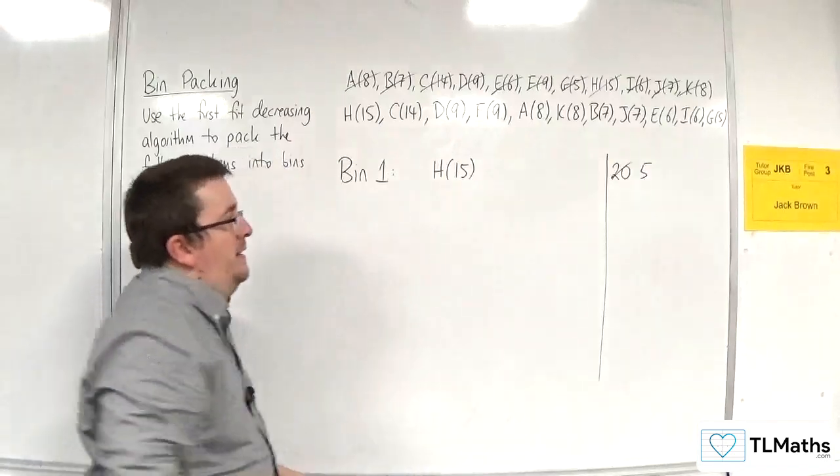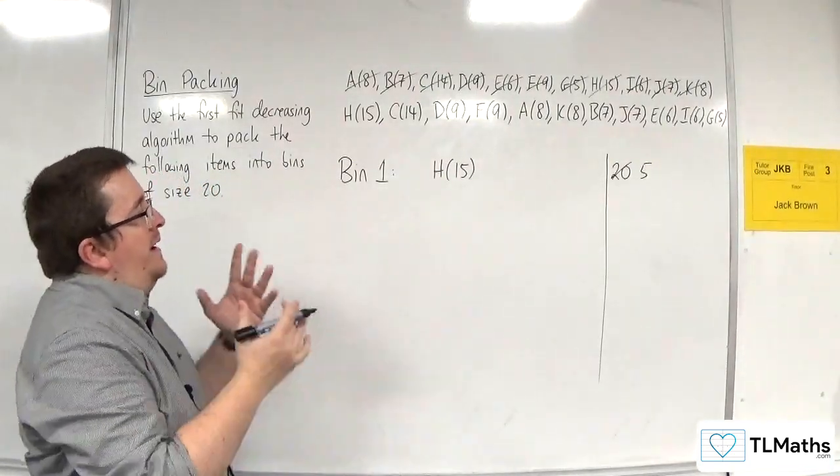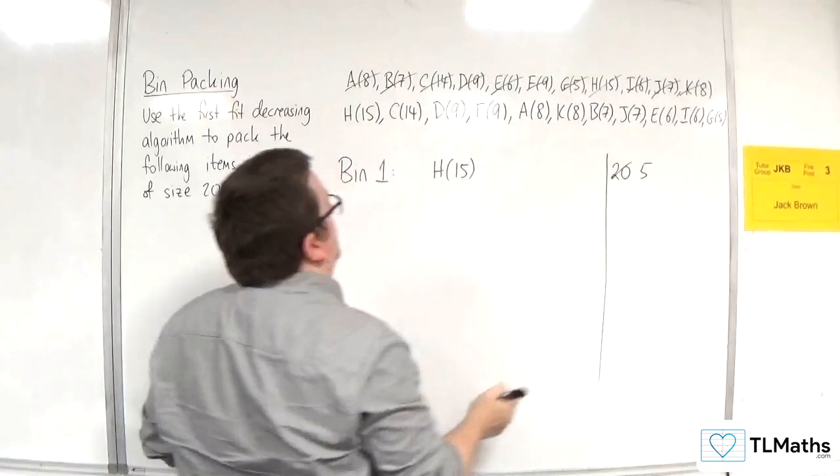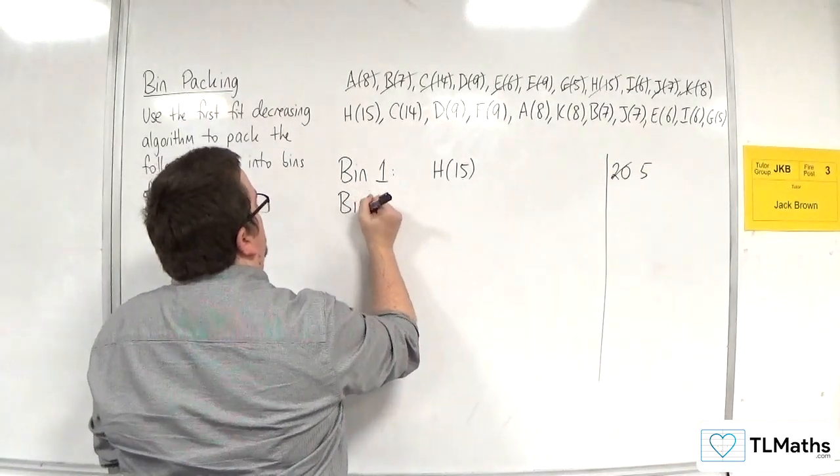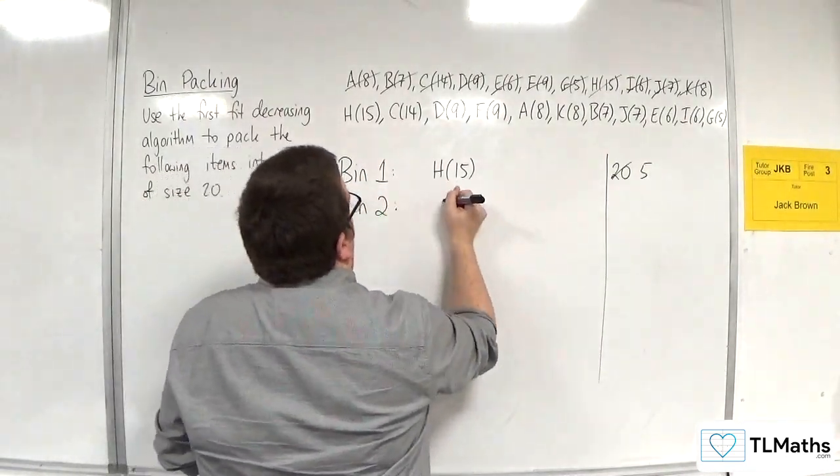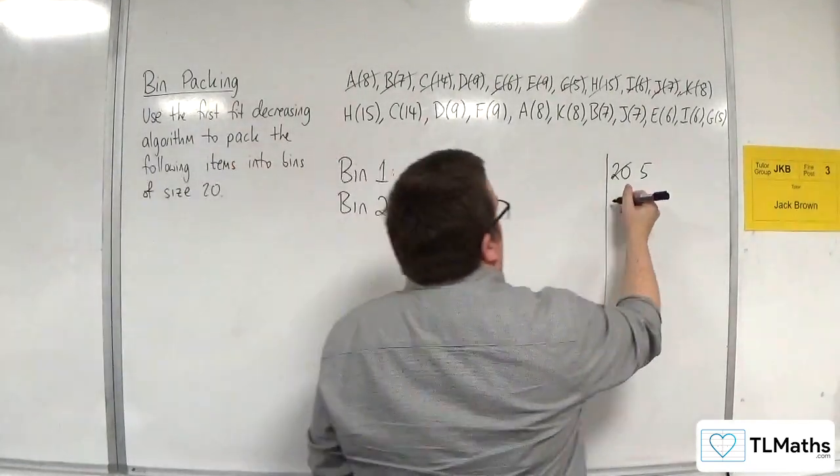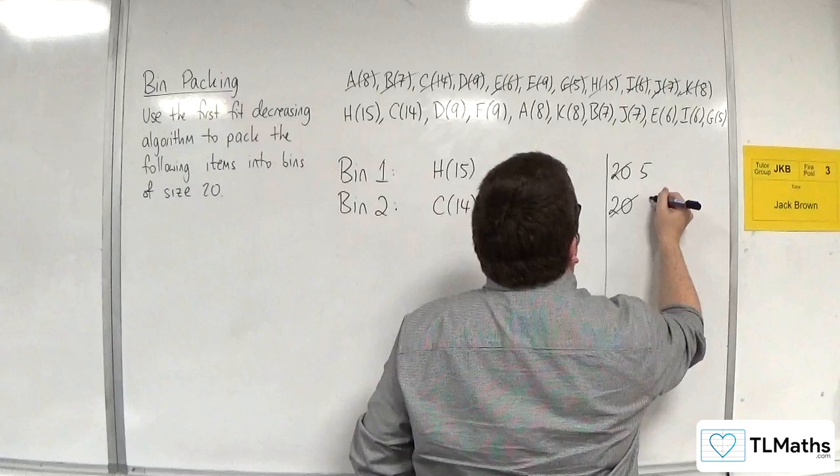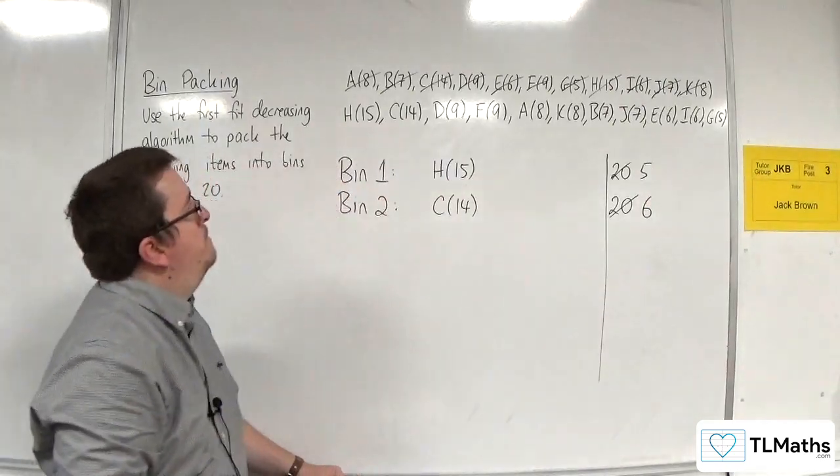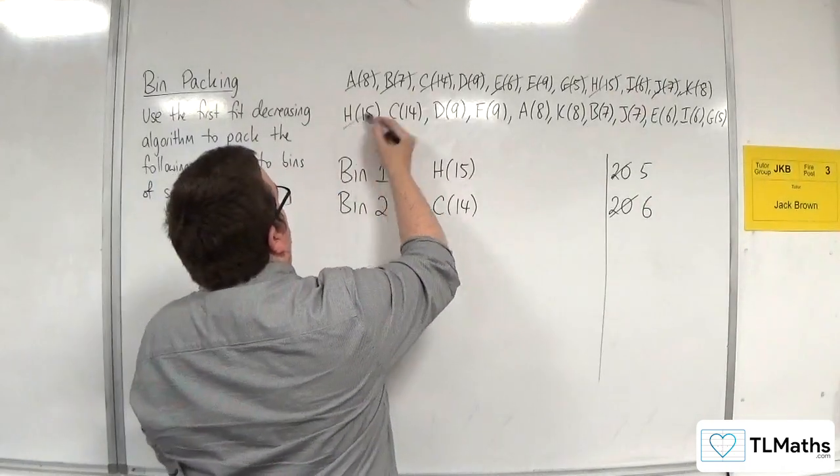Now, C14 comes along. It's the next one. Now, that doesn't go into bin 1 because I've only got 5 available space. So, that's got to go into bin 2. So, C14. And that means I've gone down from 20 down to 6.